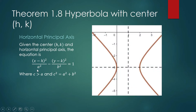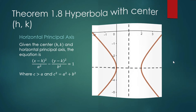A will tell you the distance of your vertex from the center. B will tell you the endpoints of our conjugate axis. And C we need to locate the focus, or the foci, of our hyperbola. When our principal axis is horizontal, the sketch of our hyperbola might look something like this. This is the center, and this is your principal axis. The line segment connecting the vertices is your transverse axis.